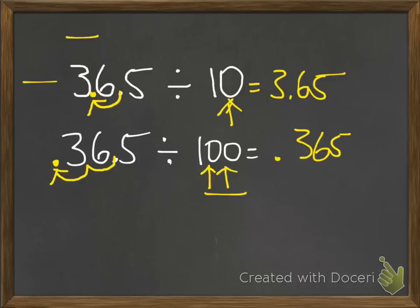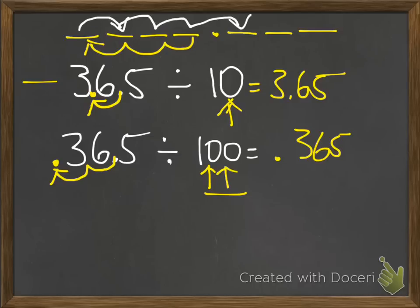Because we know from our place value chart that each place we go to the left, it increases by 10 times as much. And we also know that when we go back to the right on our place value chart, it's one tenth of the place in front of it.